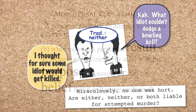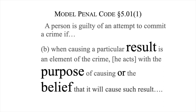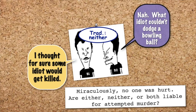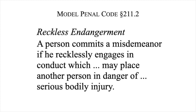The Model Penal Code provides: a person is guilty of an attempt to commit a crime if, when causing a particular result is an element of the crime, he acts for the purpose of causing, or the belief that it will cause, such result. B1 did what he believed would kill; B2 did not. A person commits a misdemeanor if he recklessly engages in conduct which may place another person in danger of serious bodily injury. This offense was unknown at common law — as was the practice of dropping bowling balls onto freeways and the practice of driving while texting.